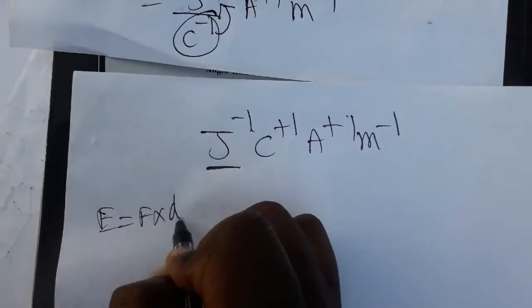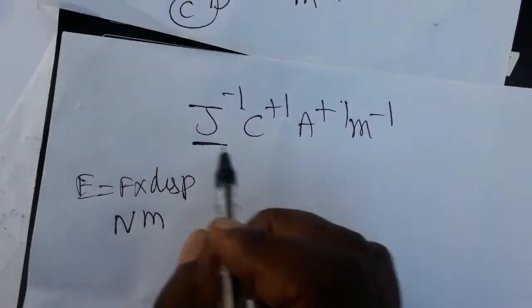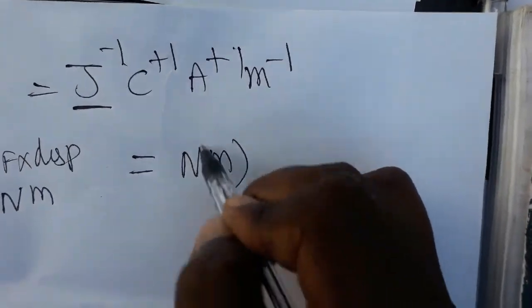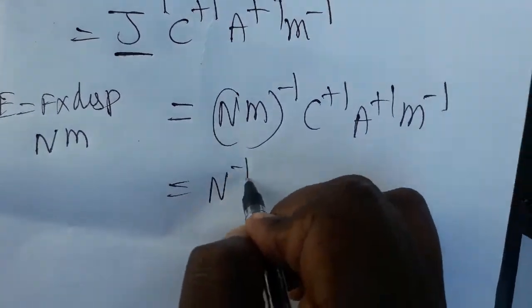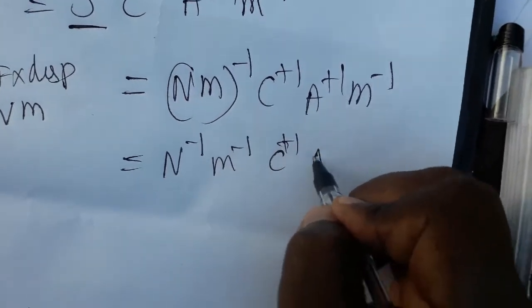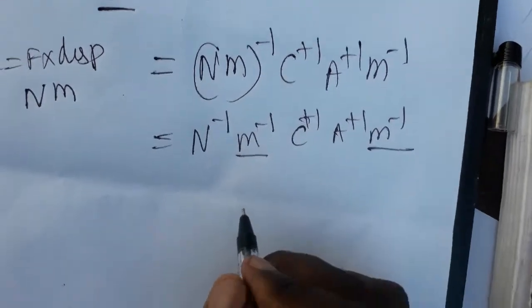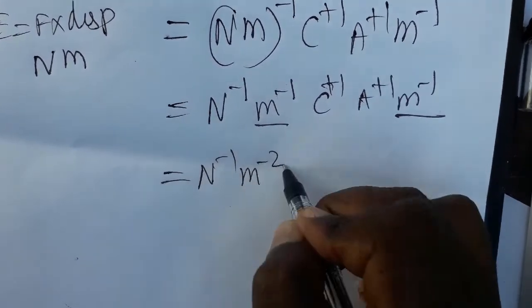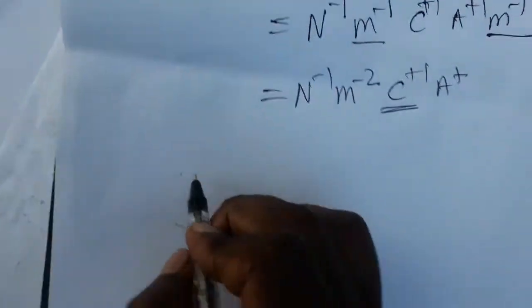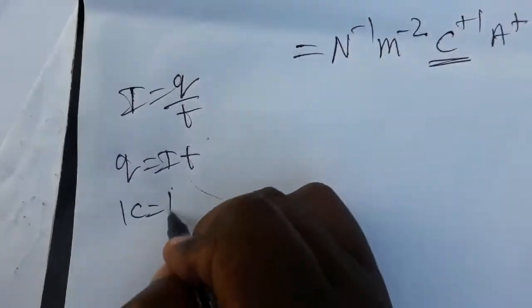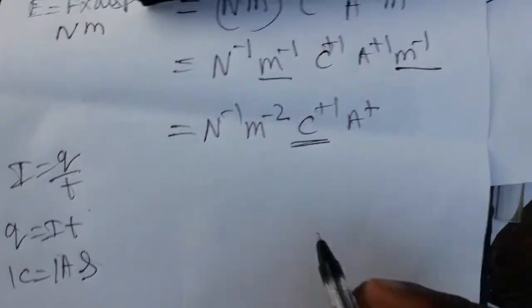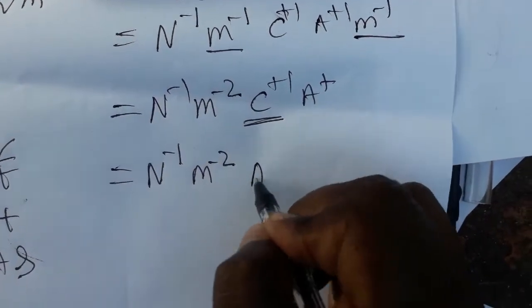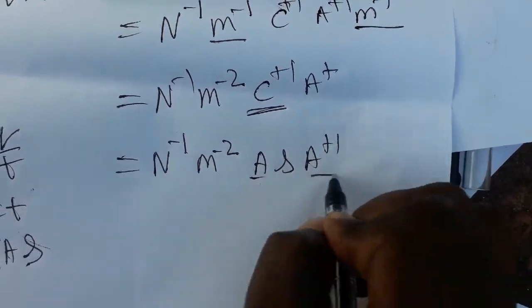What is joules? Energy is force into displacement, so joule equals newton meter. Instead of joule, we write newton meter, giving newton inverse, meter inverse, coulomb plus 1, ampere plus 1, meter minus 1. We don't have a dimensional formula for coulombs directly. Current equals charge by time, so charge equals current into time: 1 coulomb equals 1 ampere into 1 second. Substituting, we get newton inverse, meter minus 2, ampere into second, times ampere plus 1, giving ampere squared.